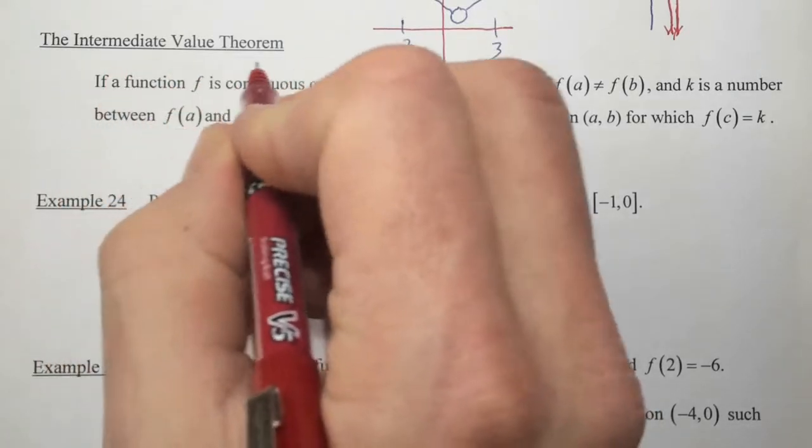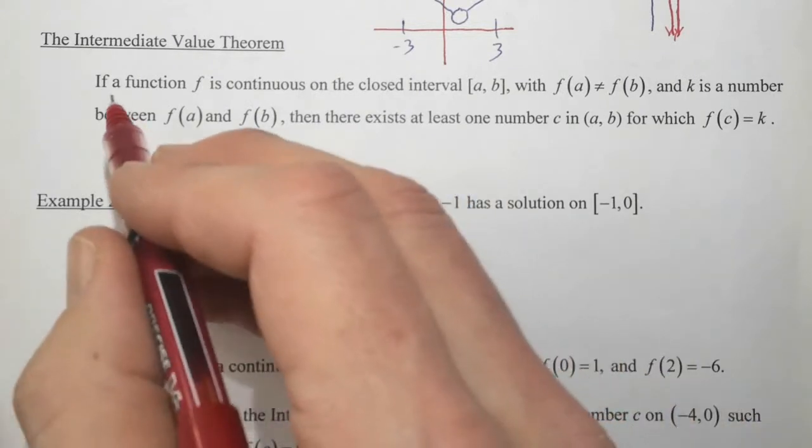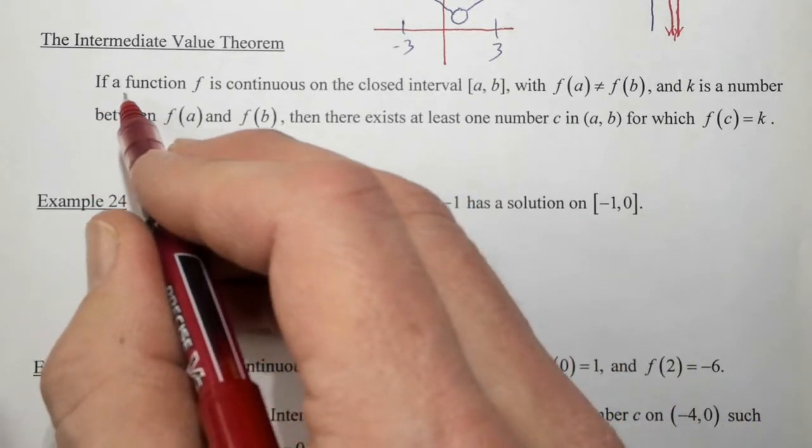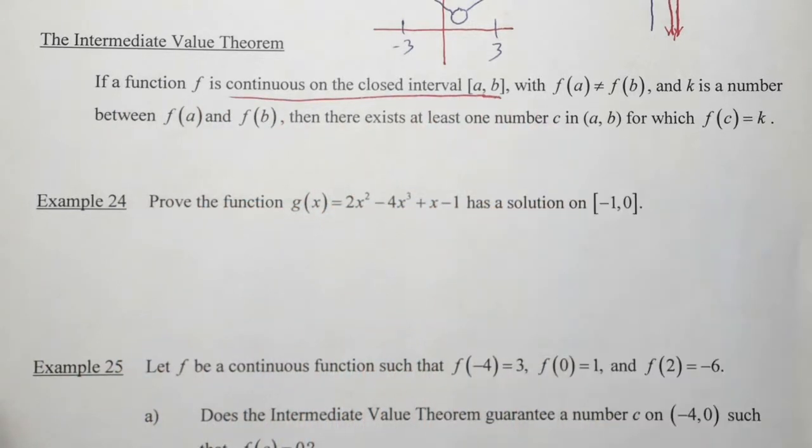The second theorem is the Intermediate Value Theorem. Now the Intermediate Value Theorem is a way for us to determine whether or not a function will equal a particular value on a closed interval. So once again, our condition states that we need the function to be continuous on the closed interval, just like for the extreme value theorem.